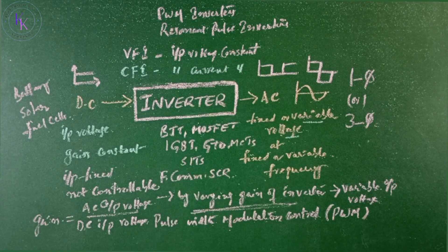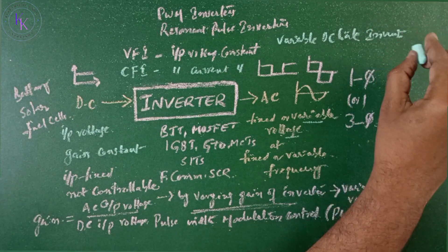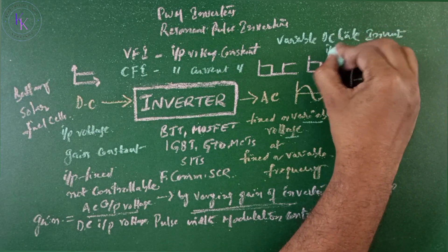An inverter is called a variable DC link inverter if the input voltage is controllable.